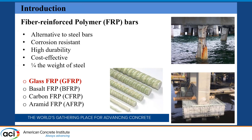FRP bars offer many advantages, such as higher tensile strength than steel, high durability, they are cheaper than steel, and also they are lightweight. There are different types of FRP bars like glass FRP, carbon FRP, basalt FRP, and aramid FRP. But among these, GFRP bars or glass FRP bars are commonly used as structural reinforcement in concrete members.